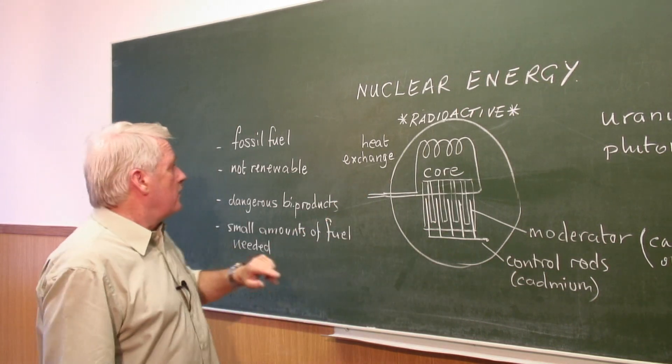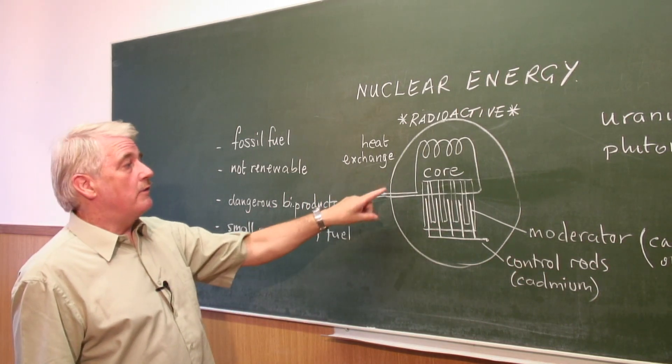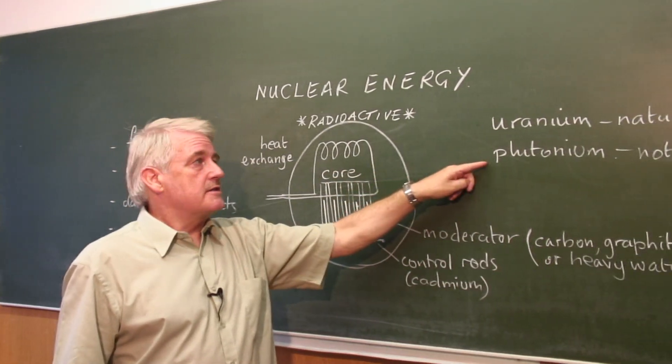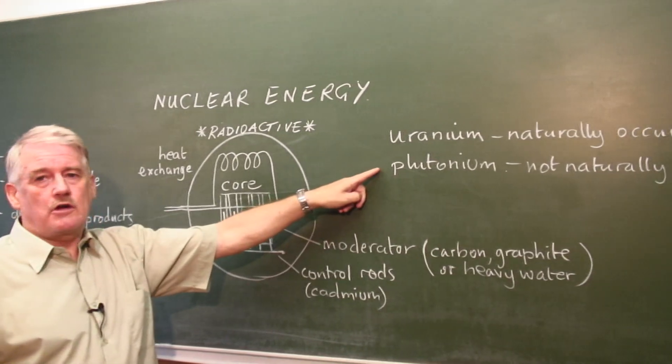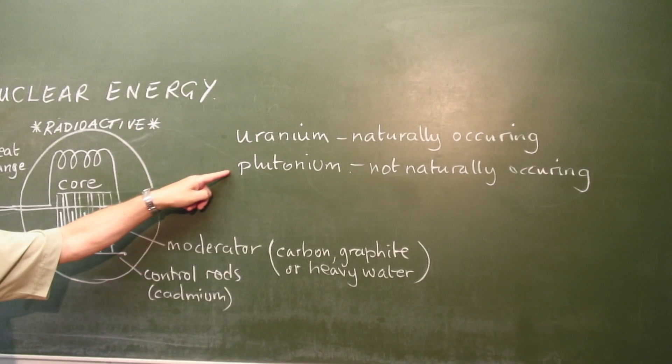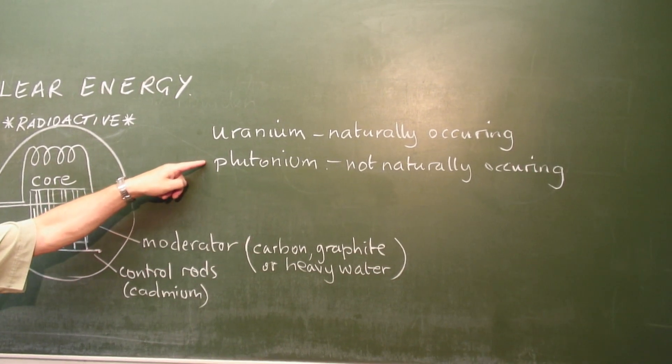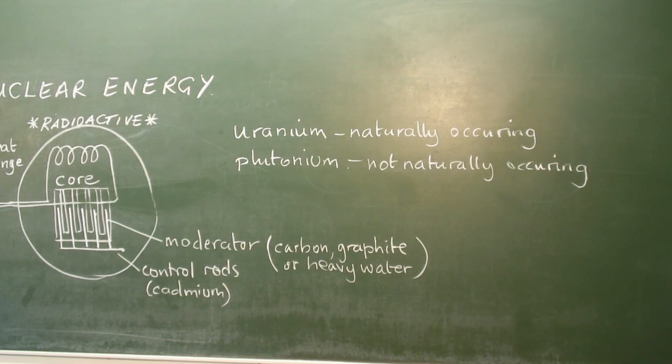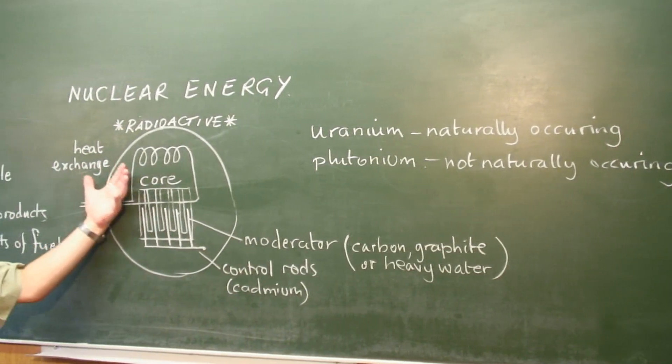We require for generation of nuclear energy one of these two substances, either uranium or plutonium. Uranium is naturally occurring, plutonium is not, and plutonium is the result of a working nuclear power station. It comes out as a by-product.